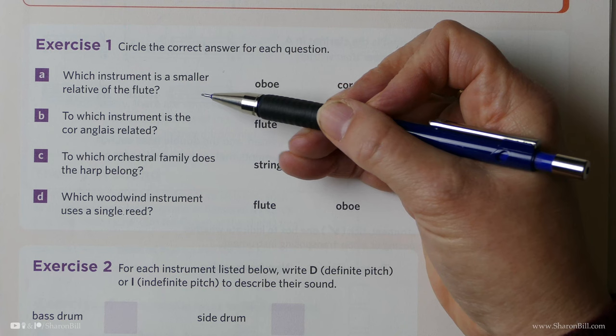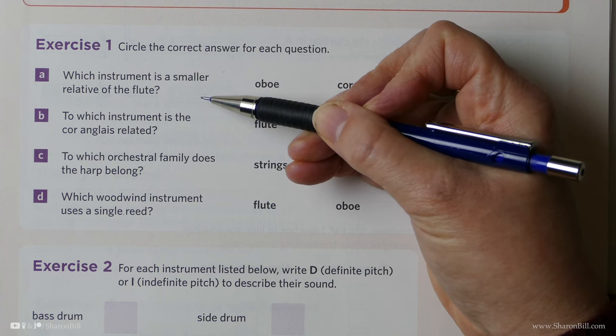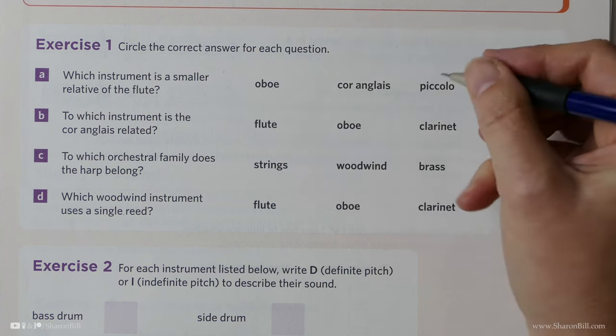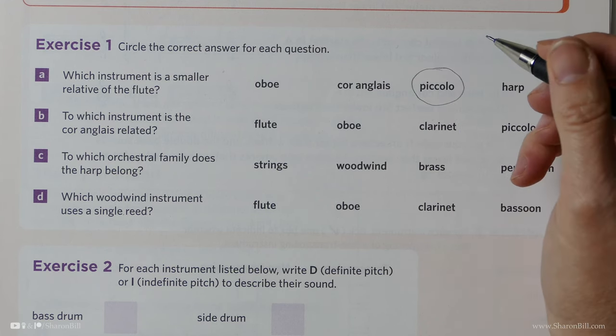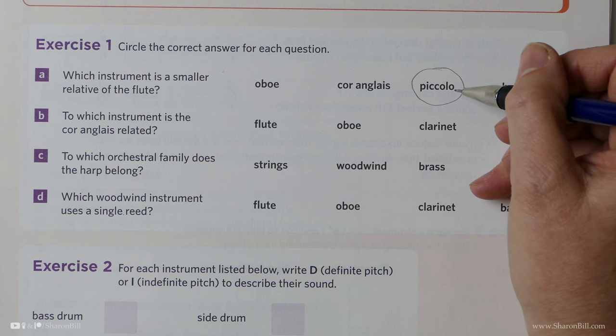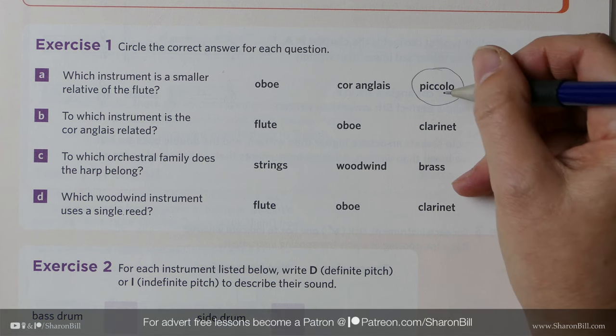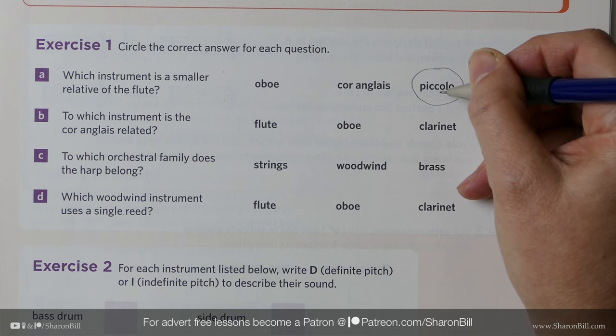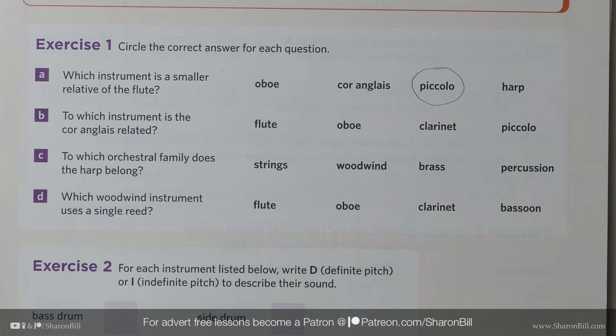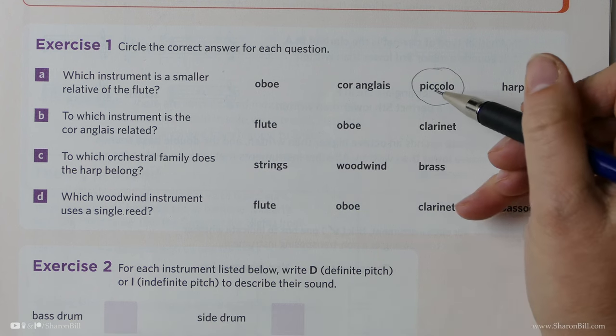Let's now try these together, hoping that you've had a go. The first question is, which instrument is a smaller relative of the flute? And that's the piccolo, which is like a miniature version of the flute. It's a miniature version in size, and it plays much, much higher. It's higher than the flute, and it plays an octave higher than written.